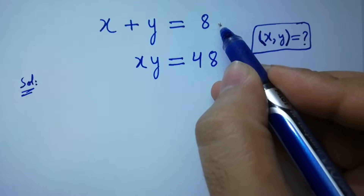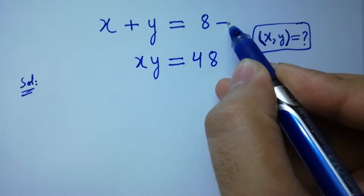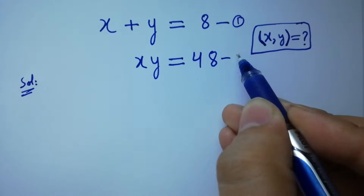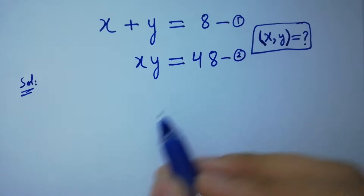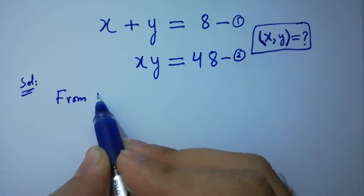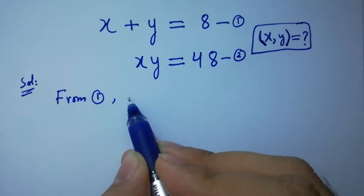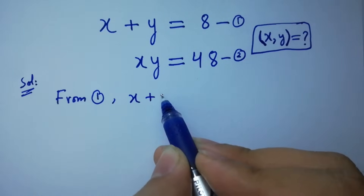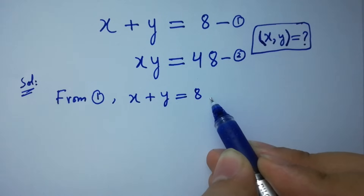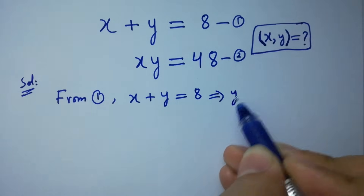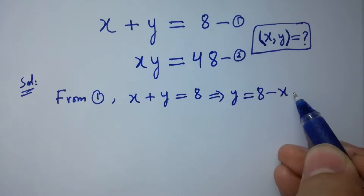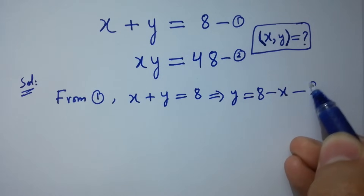Let x plus y equal to 8 be the first equation and x times y equal to 48 be the second equation. From the first equation, we have x plus y equal to 8, then y equal to 8 minus x. Let this be the third equation.